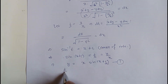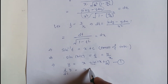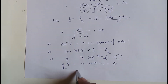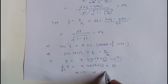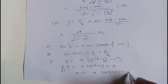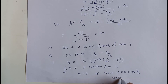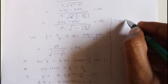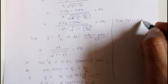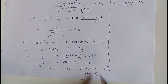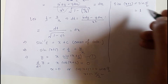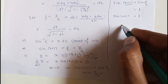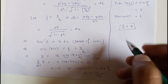To find the singular integral, differentiate equation (1) with respect to c: dy/dc = x·cos(x + c) = 0. This gives x = 0 or cos(x + c) = 0, i.e., x + c = π/2. Substituting back, sin(x + c) = sin(π/2) = 1, so from equation (1): y = x·1 = x. Therefore, the singular integral is y = x.